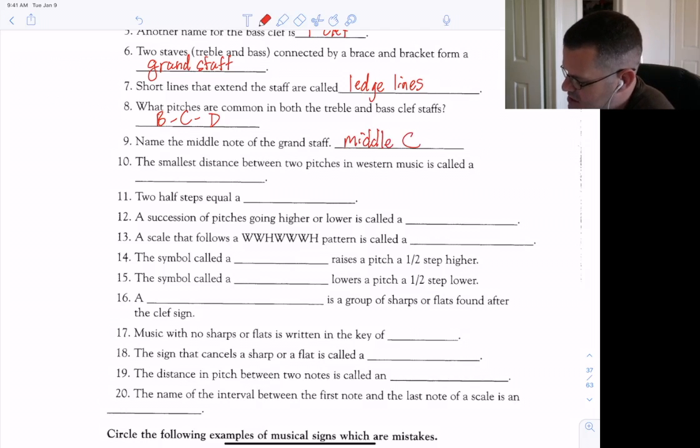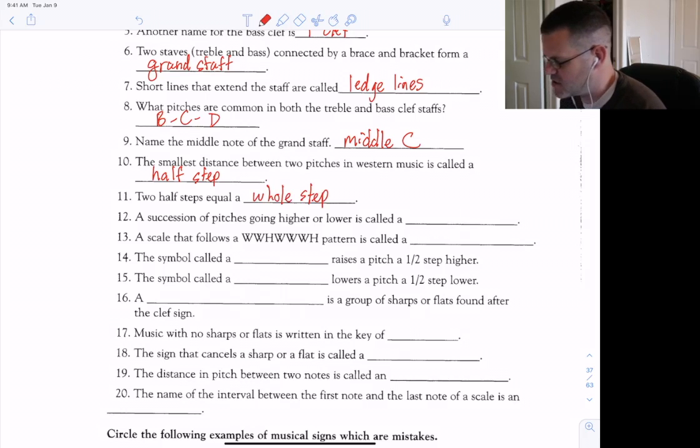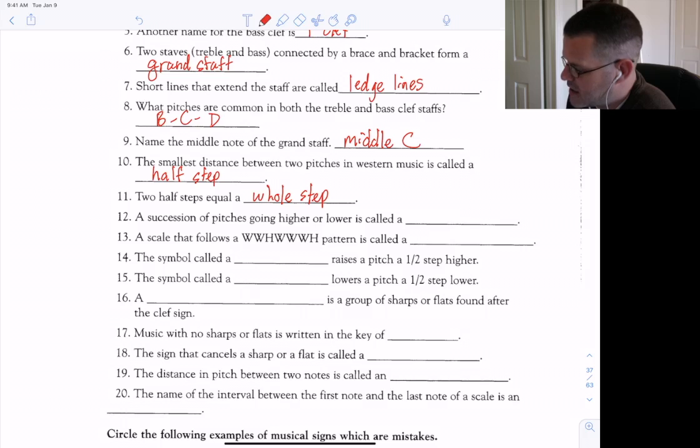The smallest distance between two pitches in Western music is called a half step. Two half steps equal a whole step. A succession of pitches going higher or lower is called a scale.